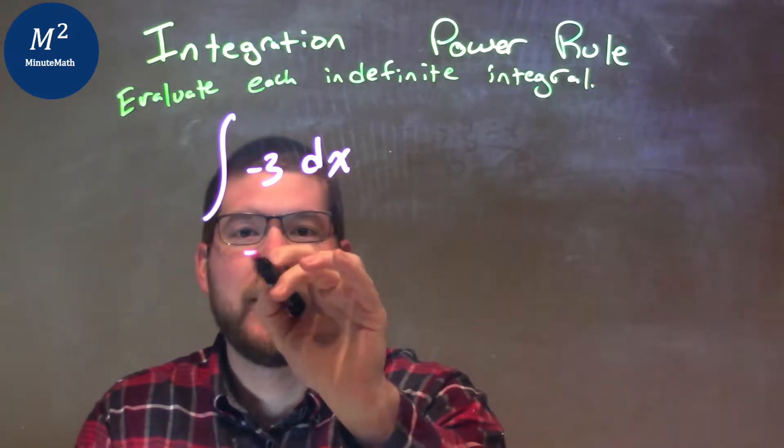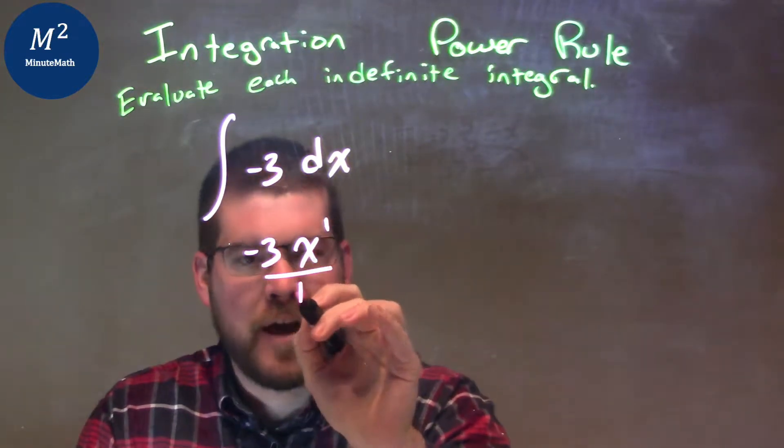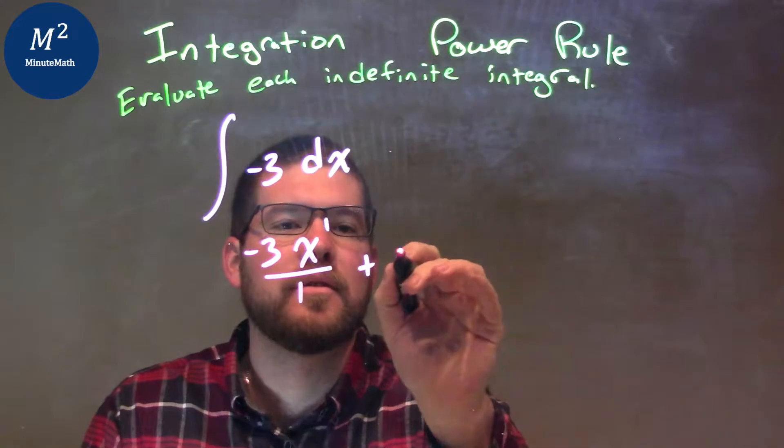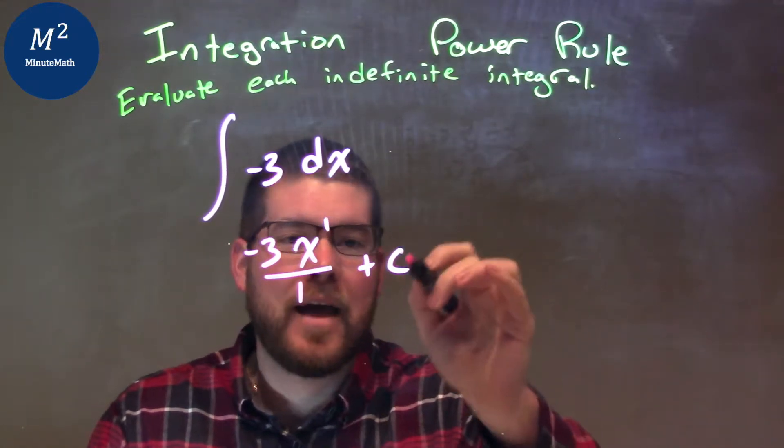We have negative 3 as the constant, x to the first power divided by that exponent of 1, plus C. There's nothing else that we can add there, so we always have to add that constant.